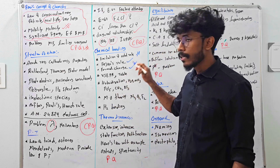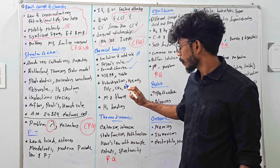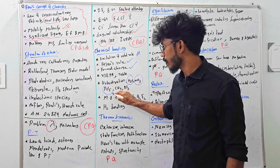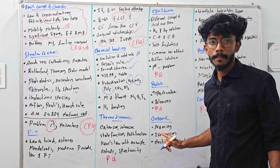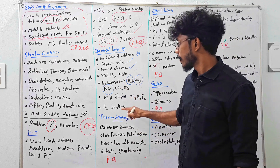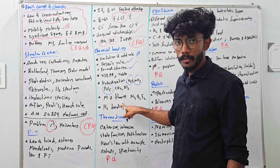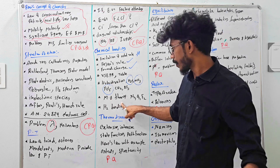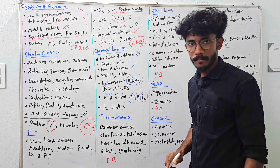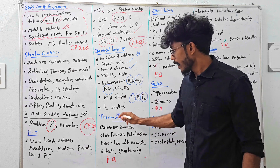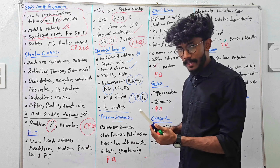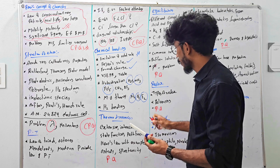For hybridization, you can use water, ammonia, and PCl5 as examples. Then, if you use MOT configuration, you can use nitrogen, oxygen, and fluorine. Now, you can study hydrogen bonding. If you use a full mark question, you can use the previous question papers. If you have any questions, you can answer them.